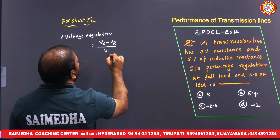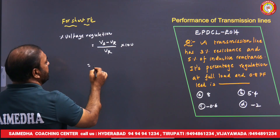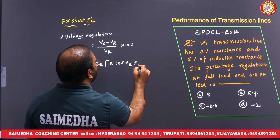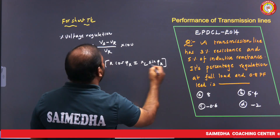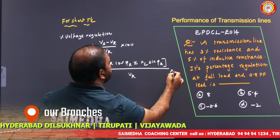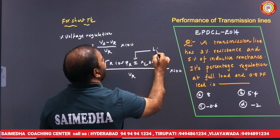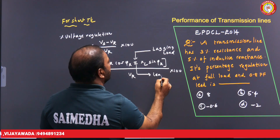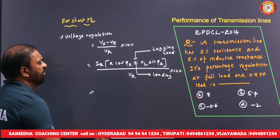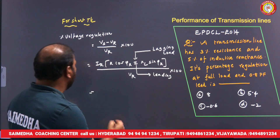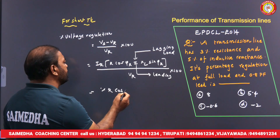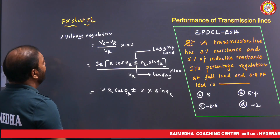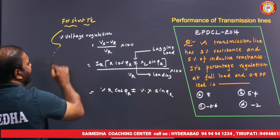Percentage voltage regulation = (Vr × R cosφr ± Xl sinφr) / Vr × 100. When percentage resistance and percentage reactance are given, this simplifies to: % Regulation = %R × cosφr ± %X × sinφr. We use plus sign for lagging loads and minus sign for leading loads.